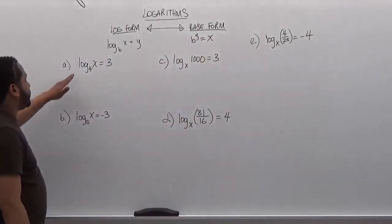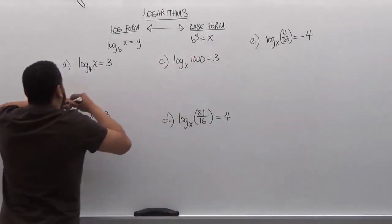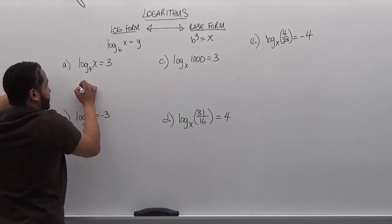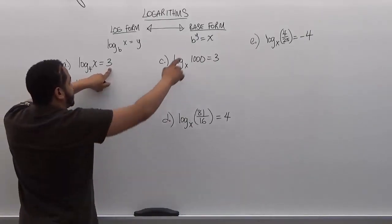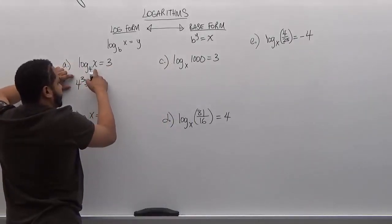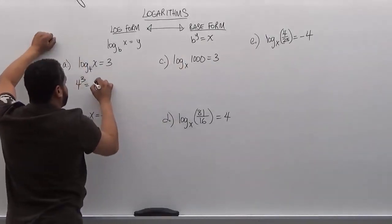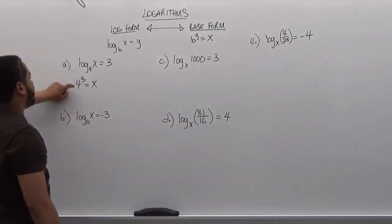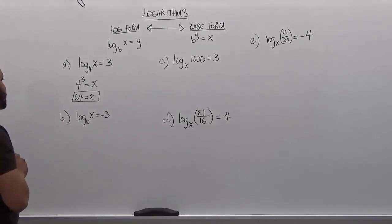Transforming this log form we take the base of 4 and make it the base of the base form expression. The 3 here becomes the exponent, and the x here becomes the solution to the base form which is just x. Now 4 to the third power is 64 and that's our solution for the term x in the logarithmic expression.